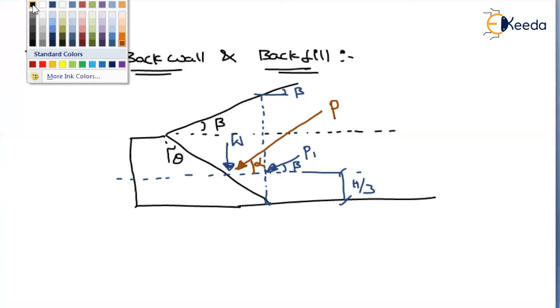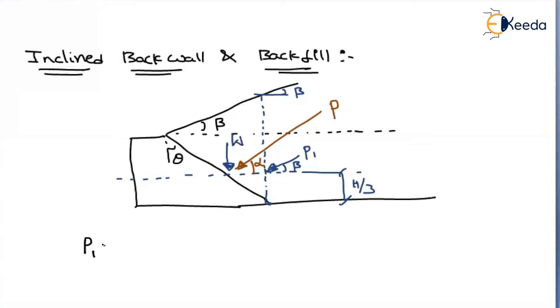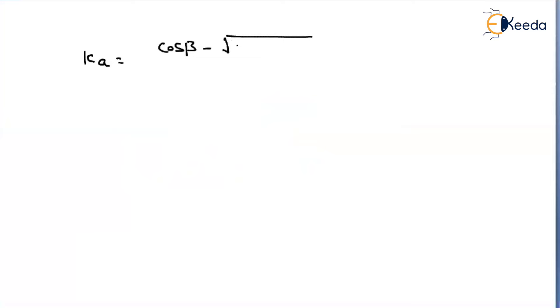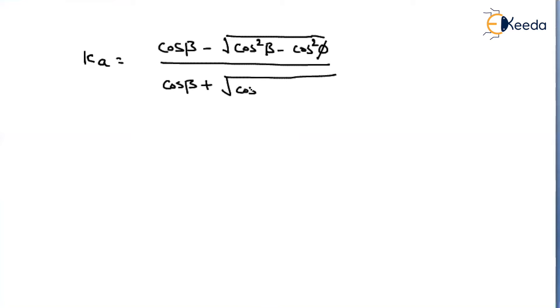Because of this inclined surcharge, P1 magnitude will be equal to: P1 = ½ · k · γ · h² · cos β. Here, k is Ka for active pressure or Kp for passive pressure. Ka is nothing but: Ka = cos β − √(cos²β − cos²φ) divided by cos β + √(cos²β − cos²φ). For Kp we reverse the equation.